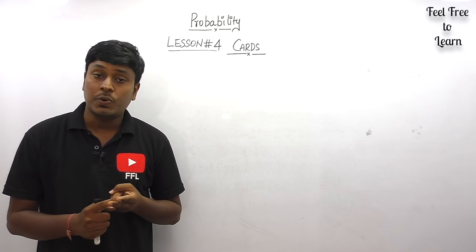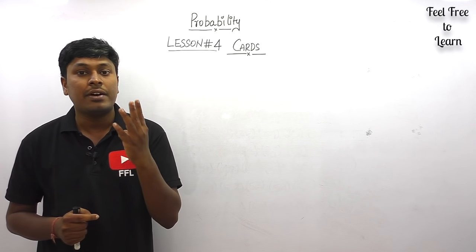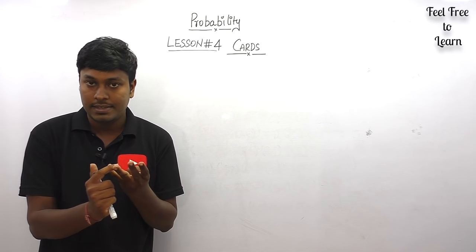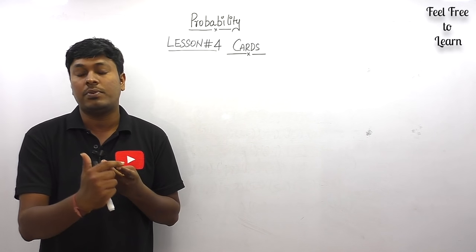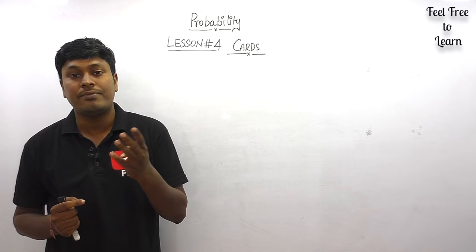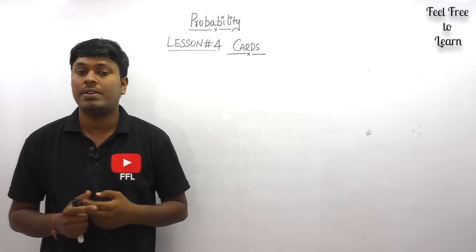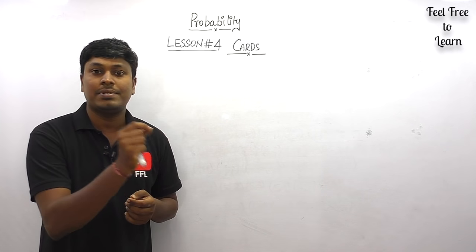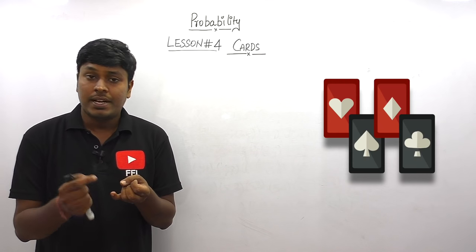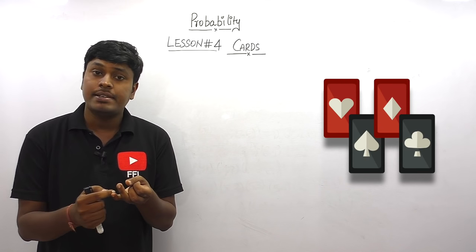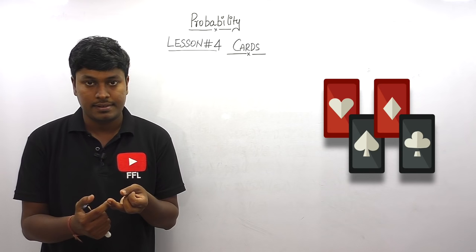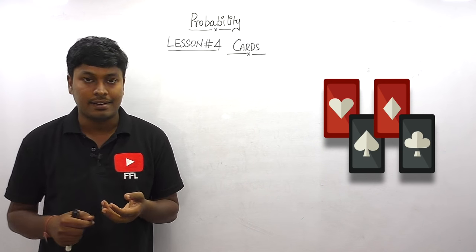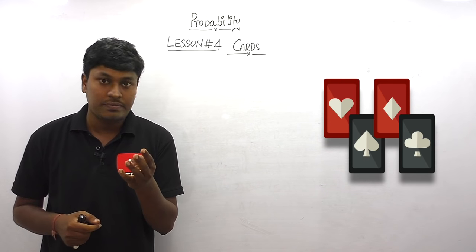Out of these 52 cards we have four different shapes: one is diamond, the second is heart, the third is club, and the fourth is spade. The shapes diamond and heart will be in red color, and the remaining two shapes — spade and club — will be in black color.